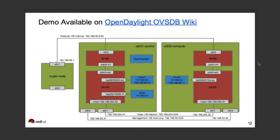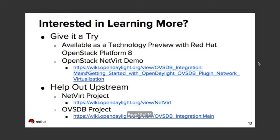If you want to try some of this stuff out, we have some really good demos on our wiki. It's an OVA file that gives you three VMs — a couple of compute nodes and a router node for talking externally — with scripts and built-in OpenStack to make it all work. A very easy way to start out. This is available as a technology preview as part of Red Hat OpenStack Platform version eight. We're always looking for people to work with us upstream; the NetVirt project and OVSDB are the main ones I work on. Thank you.